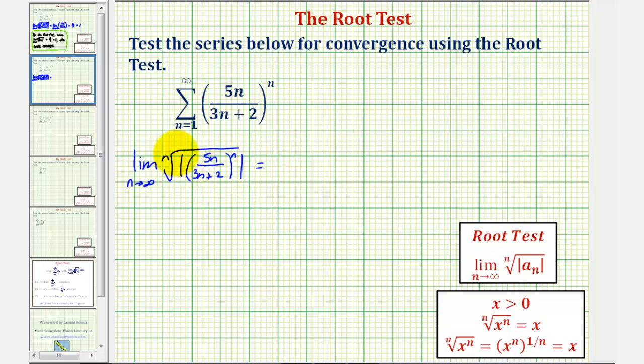Now to simplify this, when we take the limit, if we take the nth root of something raised to the nth power and we know it's positive, it will simplify to just one factor, in this case five n divided by the quantity three n plus two. So this gives us the limit as n approaches infinity of just five n divided by the quantity three n plus two.